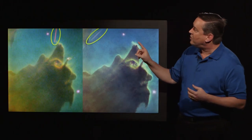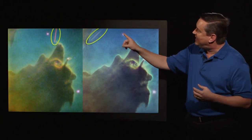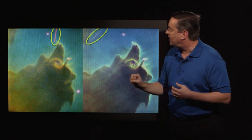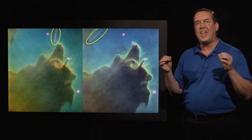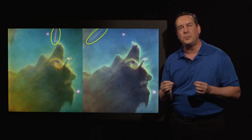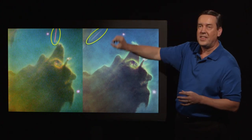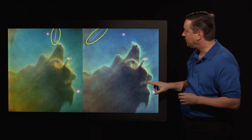You may also notice these artifacts up here — they're kind of streaks. What they are are actually just the diffraction spikes of a bright star that's located off this region of the image.